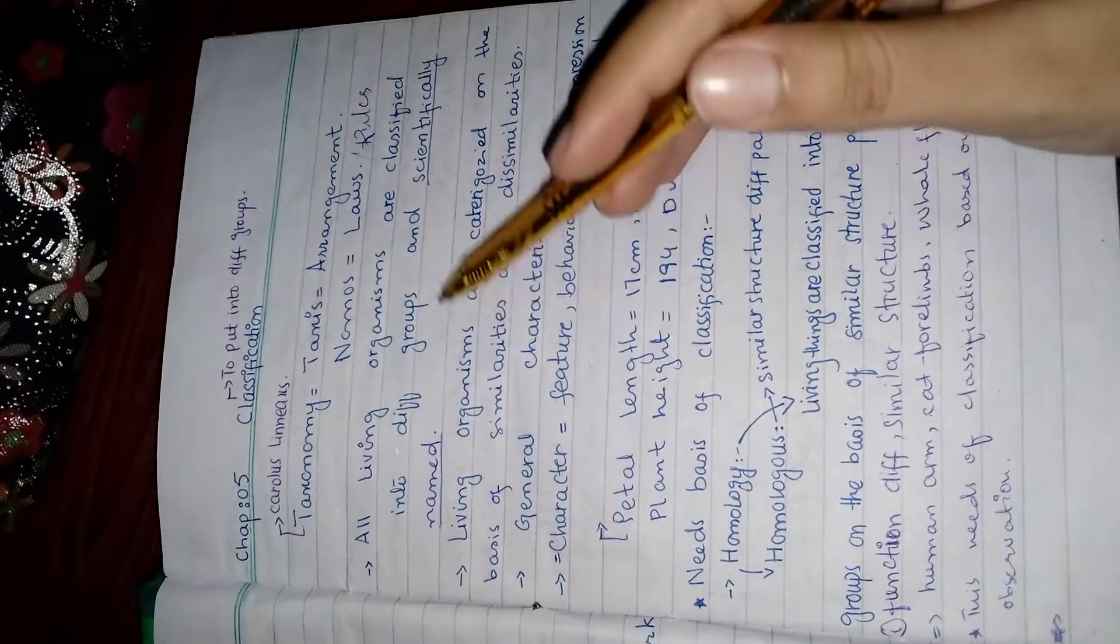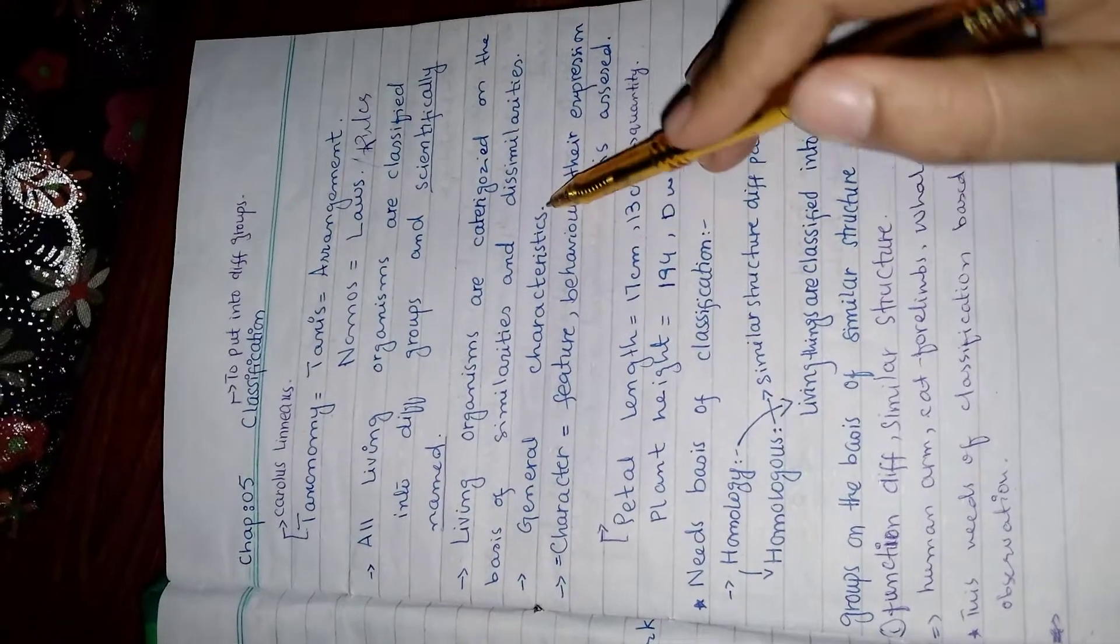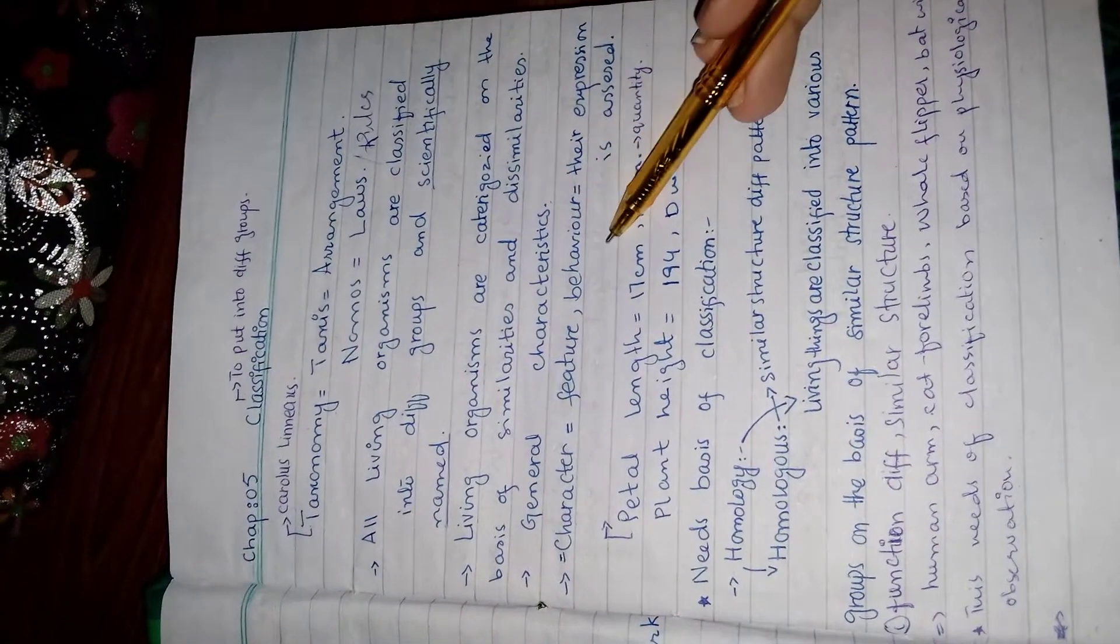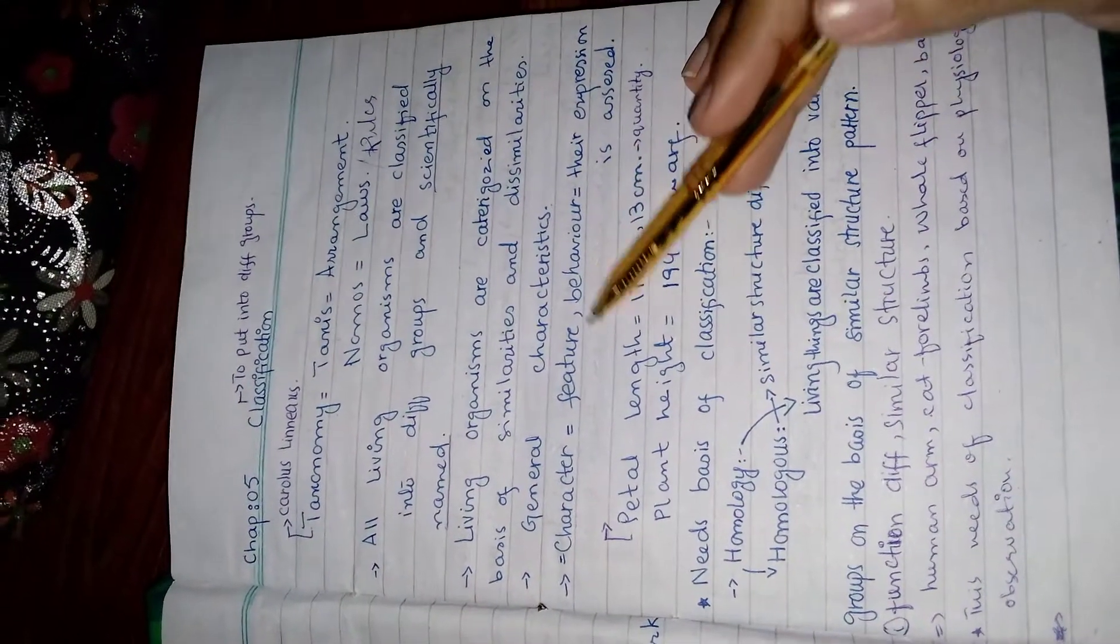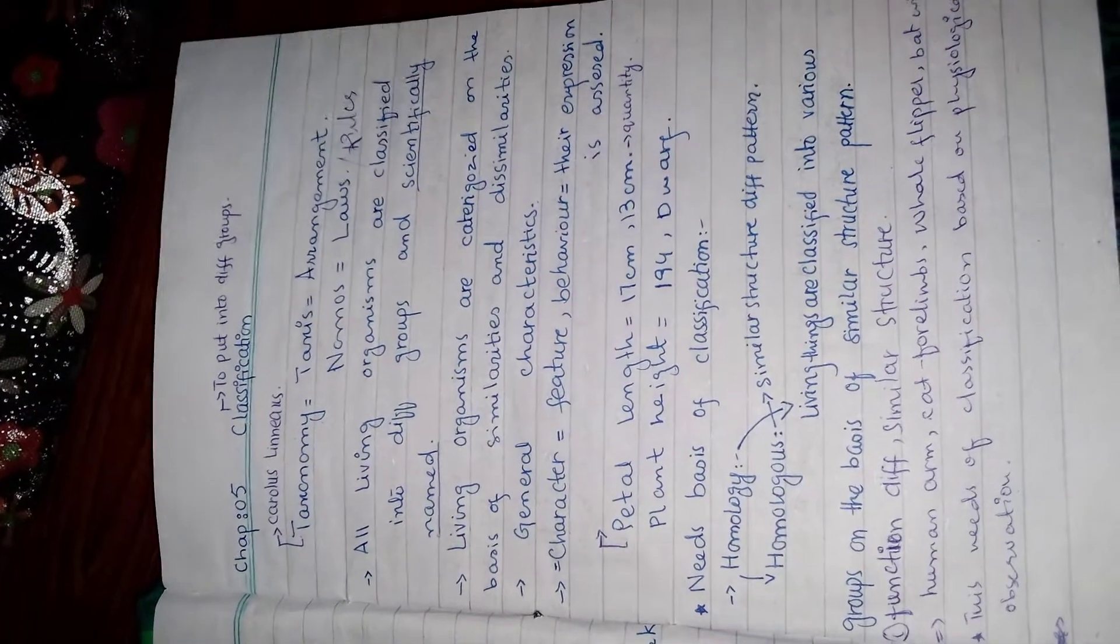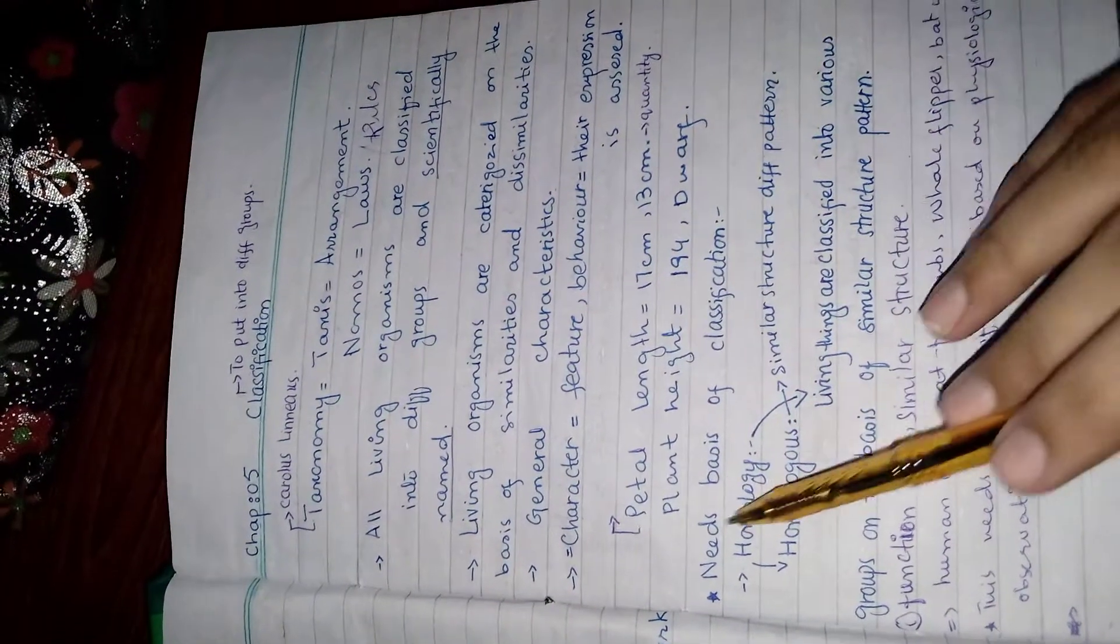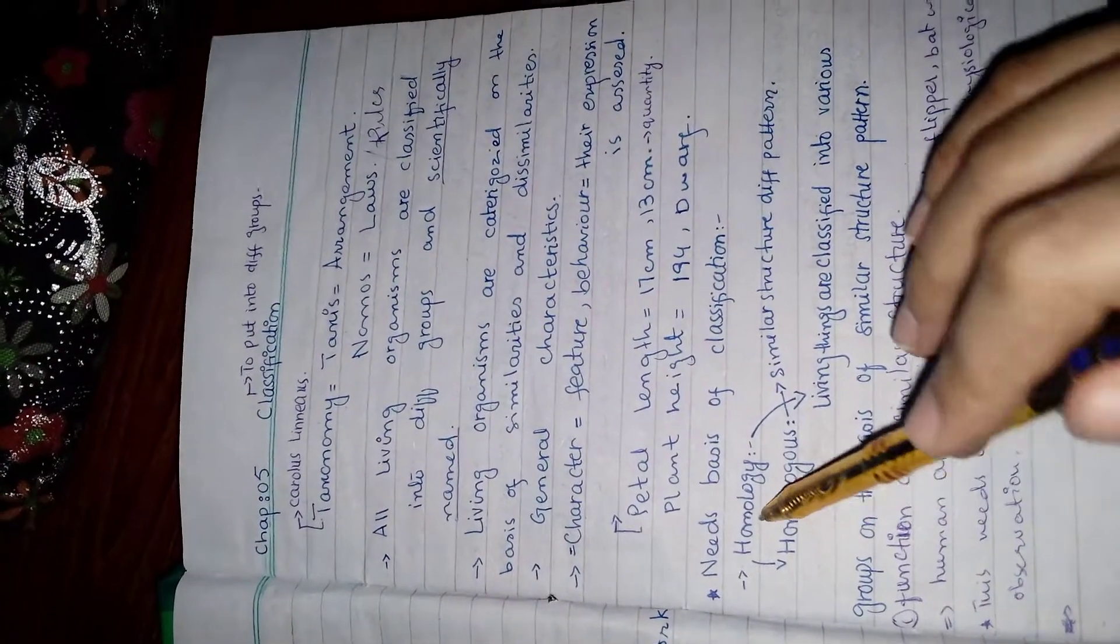In taxonomy, we discuss the general characteristics of species or plants. Those characters are their features, their behavior, their external appearance, expressions, and many more. Let's move to homology.